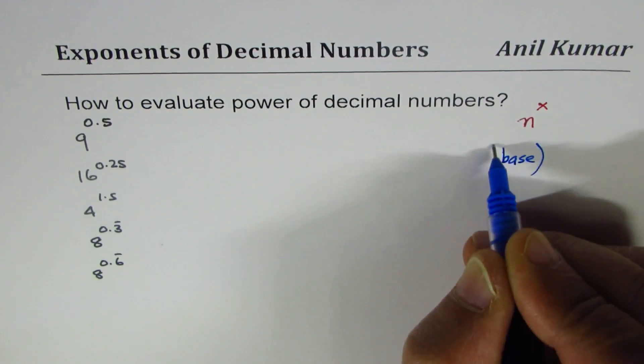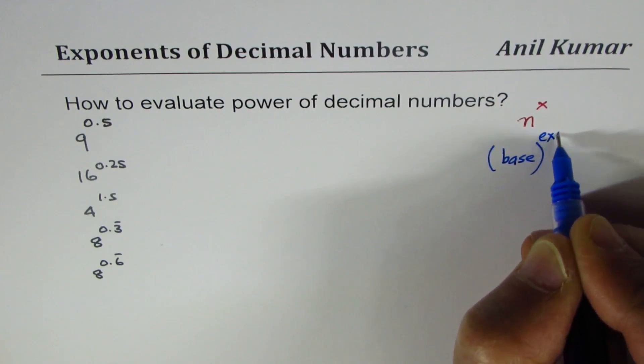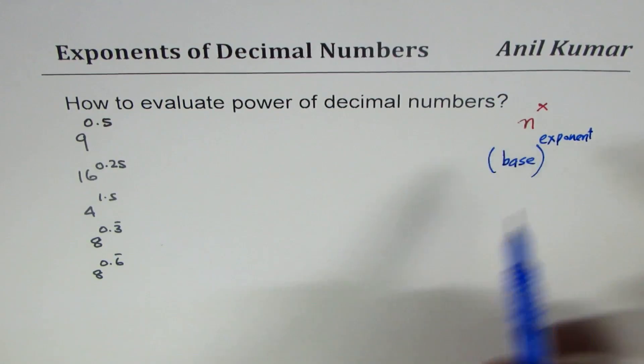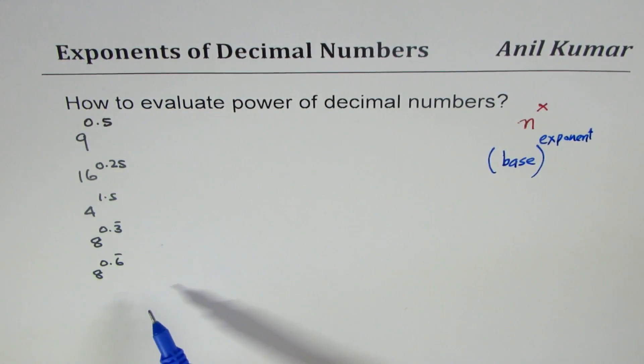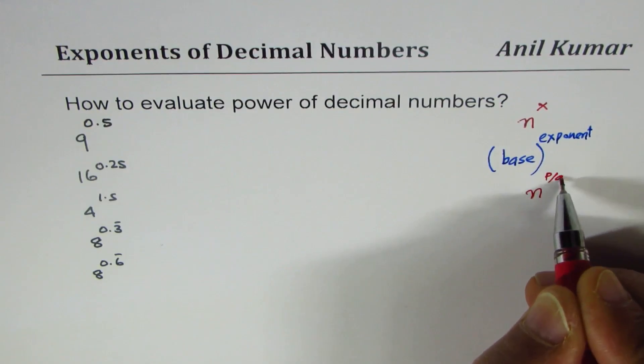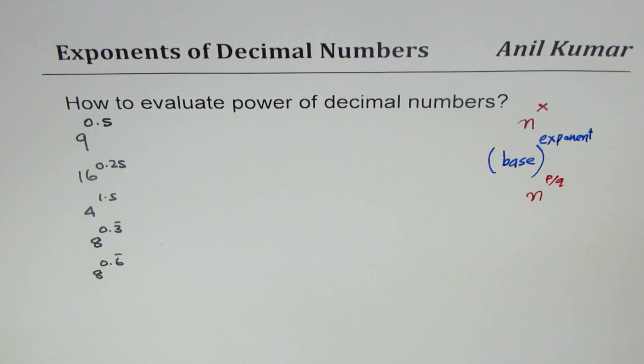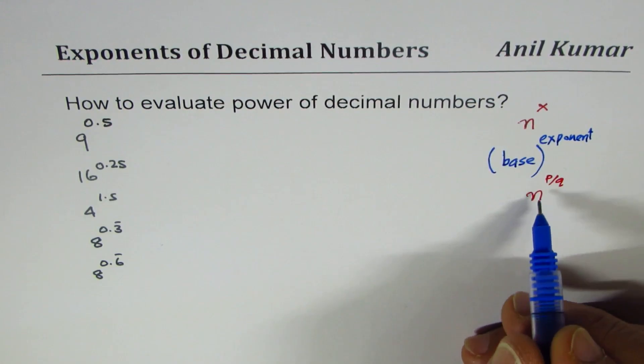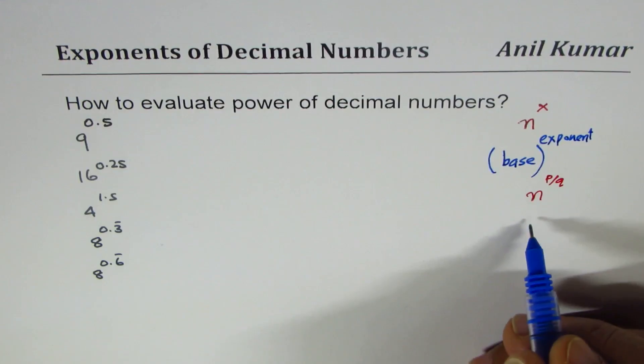Now when we are talking about decimal numbers, you will realize that it is easier to convert these decimal numbers to fractions and then work with them. So we'll also talk about n to the power of p over q type of exponents, rational exponents in the form of fractions.